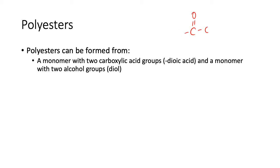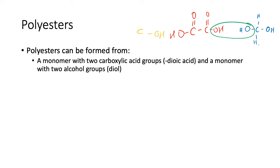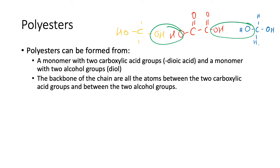Polyesters can be formed from a monomer with two carboxylic acid groups and a monomer with two alcohol groups. Because each monomer has two functional groups, they can bond together and alternate to form a really long chain. The backbone consists of all the atoms between the two carboxylic acid groups and the two alcohol groups.